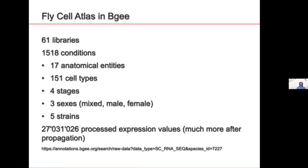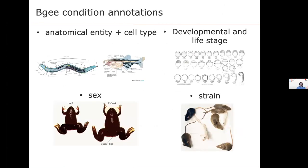We have curated a lot of the Fly Cell Atlas — all public data in BG — available through this link. We curated 61 libraries, 1,500 conditions, and obtained 27 million processed expression values. Overall, what do we annotate to in BG? We annotate to anatomical entity and cell type, but also have separate ontologies for developmental and life stages — including embryonic development, aging, and post-embryonic development such as metamorphosis — and for sex: male, female, undefined, or hermaphrodite as in C. elegans, and strains or populations.